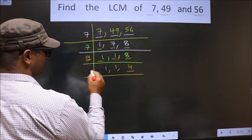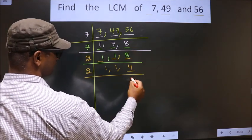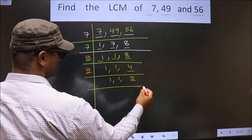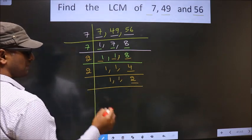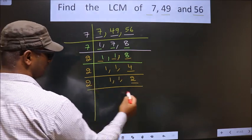Now we have 4. 4 is nothing but 2, 2 is 4. Now here we have 2, 2 is a prime number. So we take 2 once, 2.